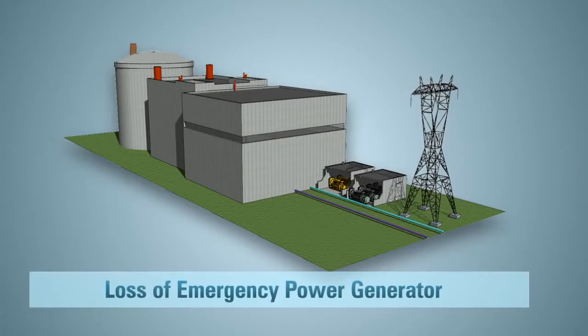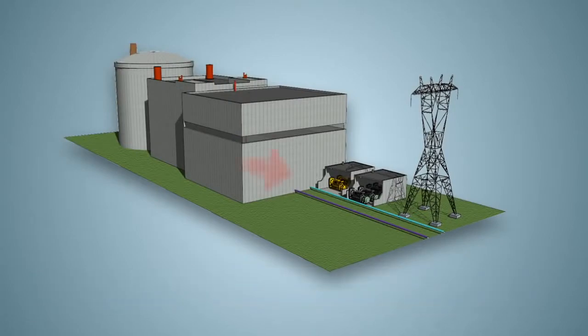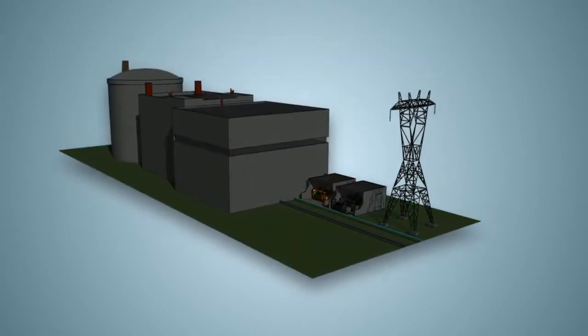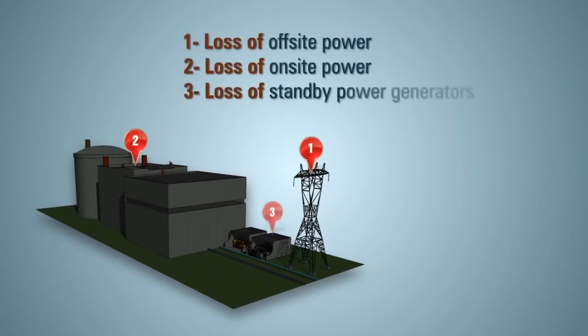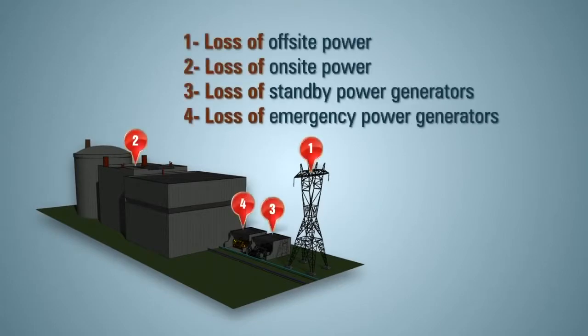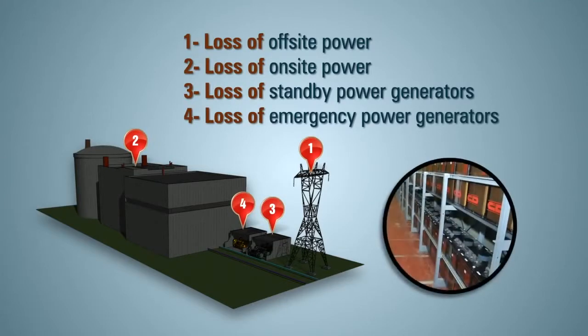Though unlikely, let's keep going and assume the emergency power generators stop working. We now have a total station blackout. This means all power sources used to cool the reactor and spent fuel pool, including off-site power, on-site power, and the standby and emergency power generators are all unavailable. Batteries are now powering emergency lighting and essential instrumentation.